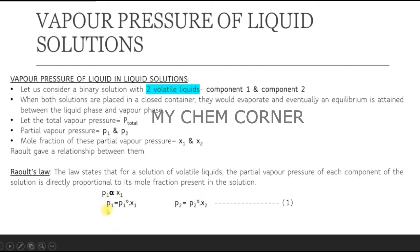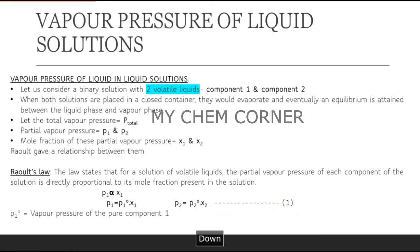To remove the proportionality, we introduce a constant: p1 = p1° × x1, and p2 = p2° × x2. We'll call these equation number one. Here, p1° is the vapor pressure of pure component one, and p2° is the vapor pressure of pure component two.